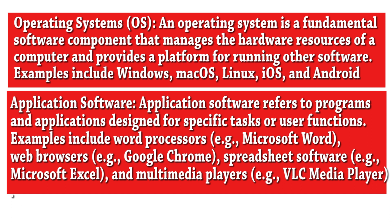Here are the main categories of software. An operating system is a fundamental software component that manages the hardware resources of a computer and provides a platform for running other software. Examples include Windows, macOS, Linux, iOS, and Android. Application software refers to programs and applications designed for specific tasks or user functions.